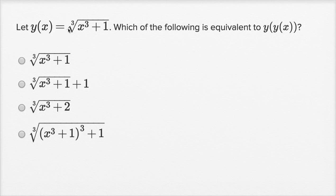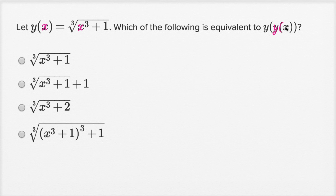Let y of x be equal to the cube root of x to the third plus one. Which of the following is equivalent to y of y of x? This is going to be fun. So we know that y of x is equal to the cube root of x to the third plus one. Which of the following is equivalent to y of y of x?